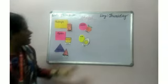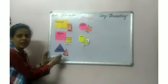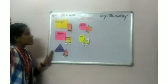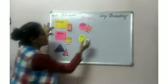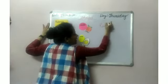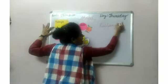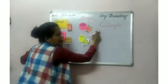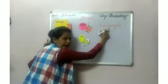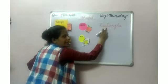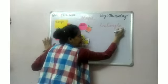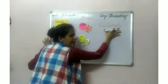Now we will learn the spellings of the shapes. First is rectangle. Repeat with me: R-E-C-T, rect, R-E-C-T, rect, A-N-G-L-E, angle. Rectangle.